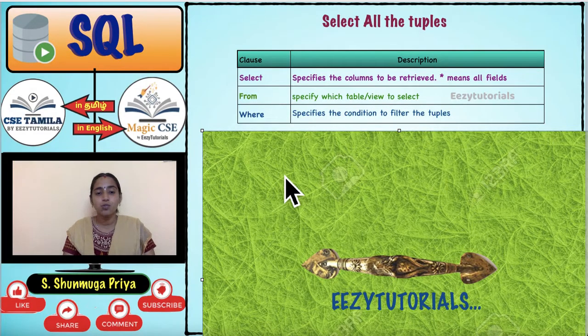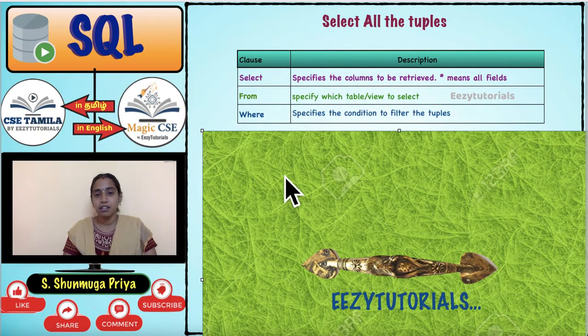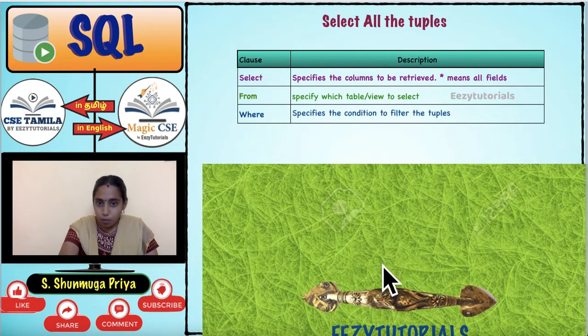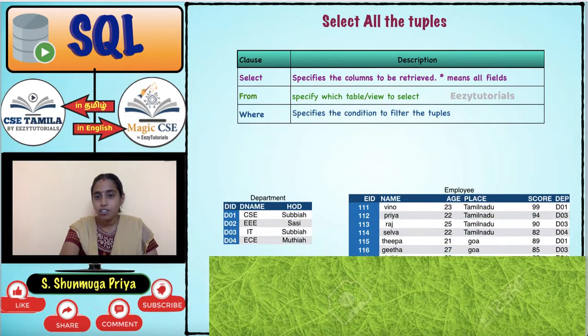The WHERE clause is used to specify conditions for filtering the results. These are the three main clauses of the SELECT command.